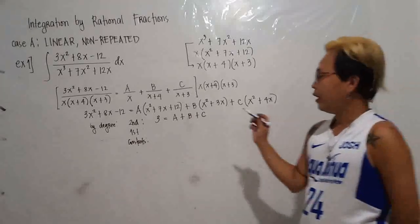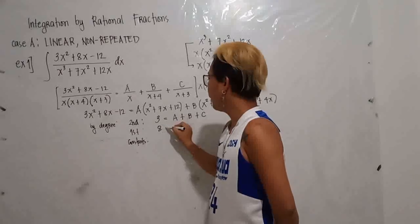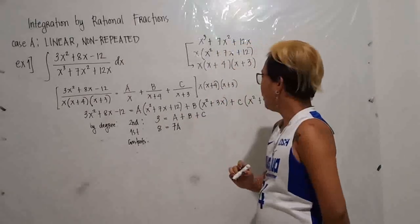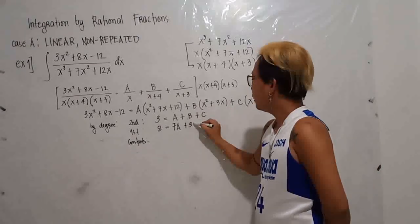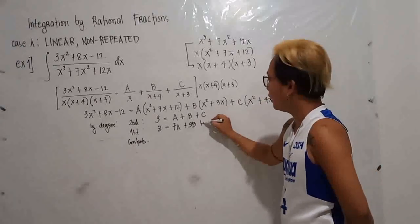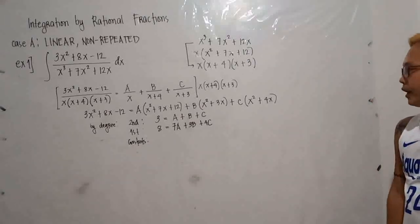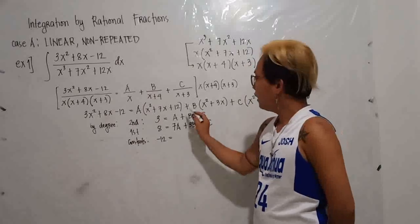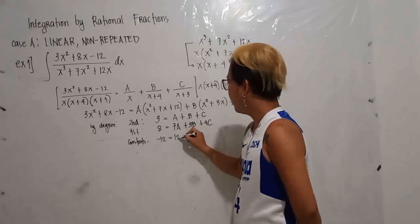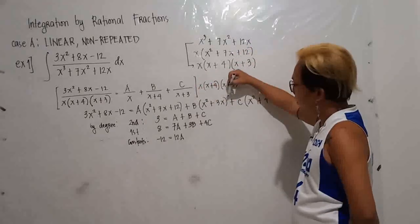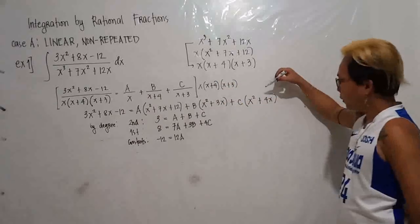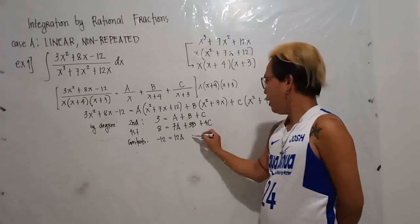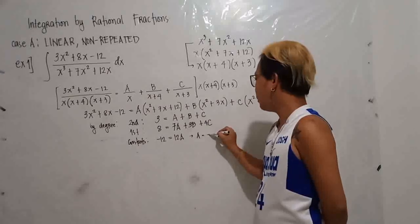That is your first equation. For the constants: the left side is −12, and on the right side, A contributes 12A, while B and C have no constant terms. So the third equation is −12 = 12A. Solving, A = −1.